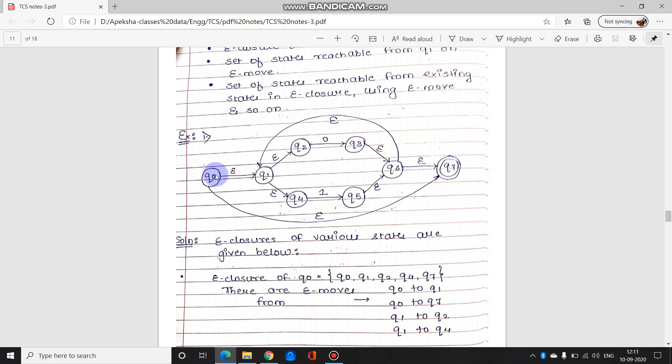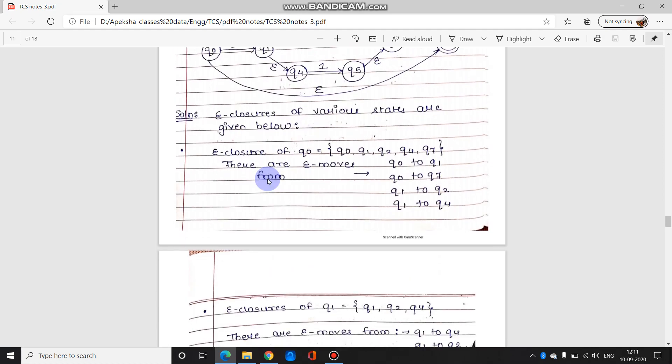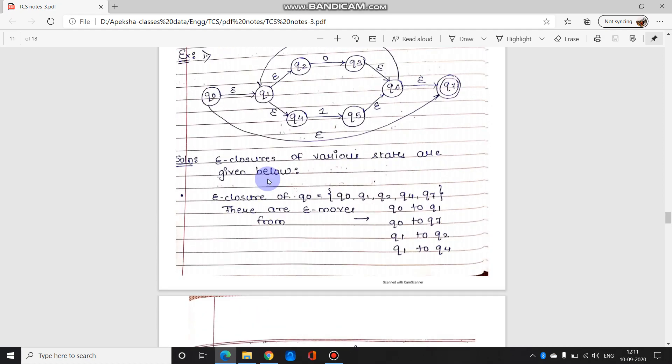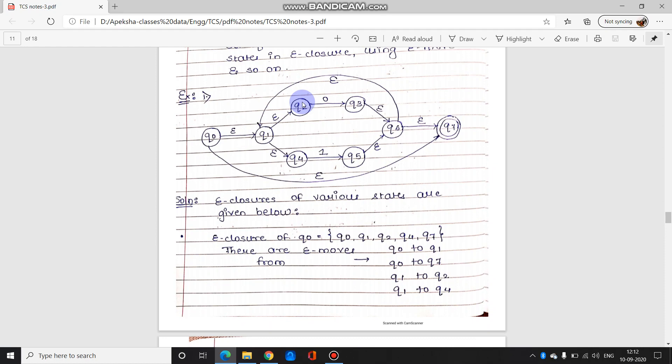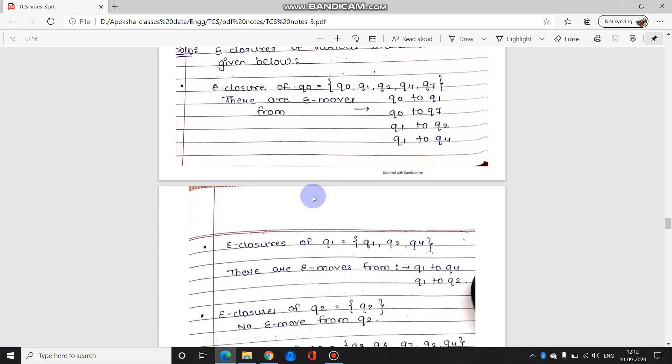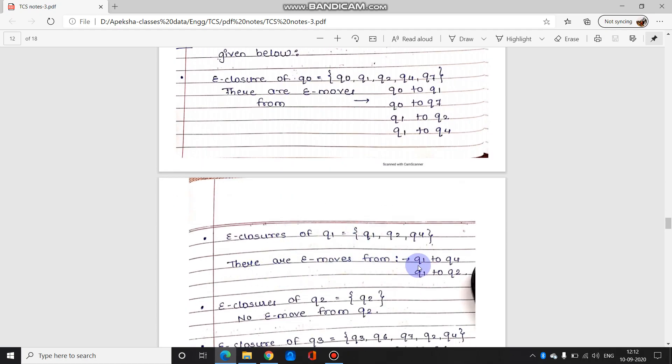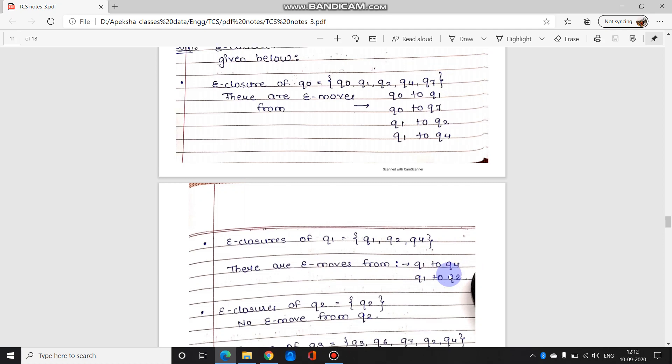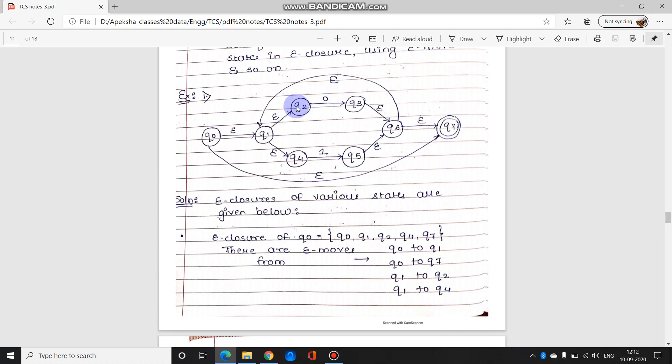So ek state se start karne ke baad itne, wohi state se itne saare epsilon moves hai, do direct moves hai, do via via moves hai. Iske liye all those states are included in e-closure of Q0. Similarly, you find e-closure of Q1. So now when you find for Q1, it will be Q1, Q2, and Q4. Direct hai, see Q1 se Q2 ja raha hai, Q2 se there is no epsilon move. Q1 se Q4 ja raha hai and even from Q4 there is no epsilon moves. So e-closure likhne ka, then you have to describe the moves Q1 to Q4 and Q1 to Q2. Then we go on to the next state, e-closure of Q2.